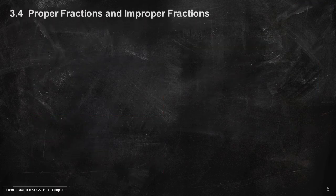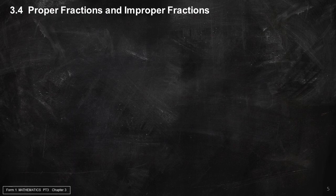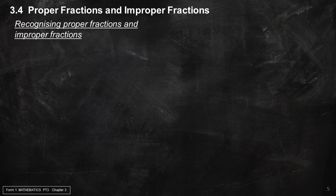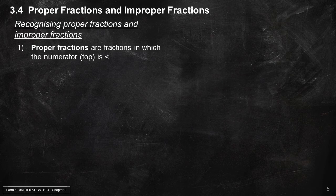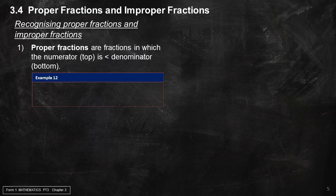Section 3.4: Proper Fractions and Improper Fractions. Proper fractions are fractions in which the numerator (top) is smaller than the denominator (bottom). Example 12: Some proper fractions are 3 over 7, 11 over 21, 113 over 117, etc. All proper fractions are smaller than 1.